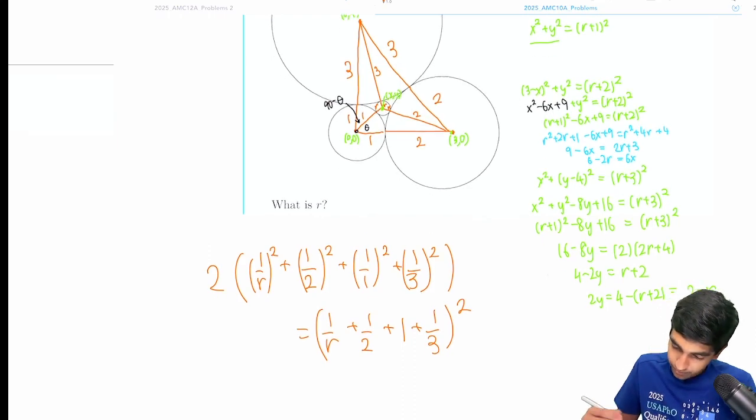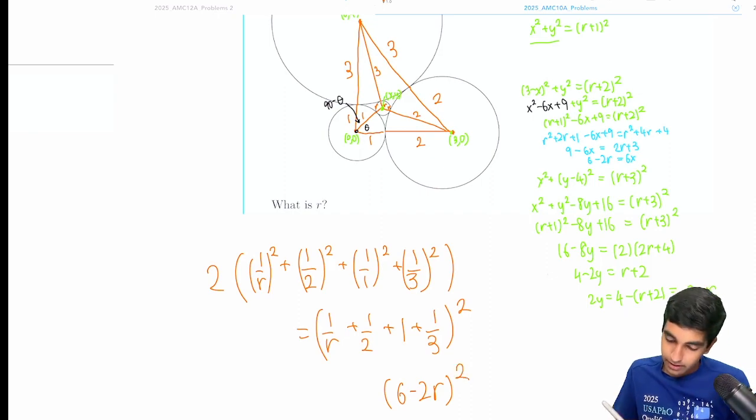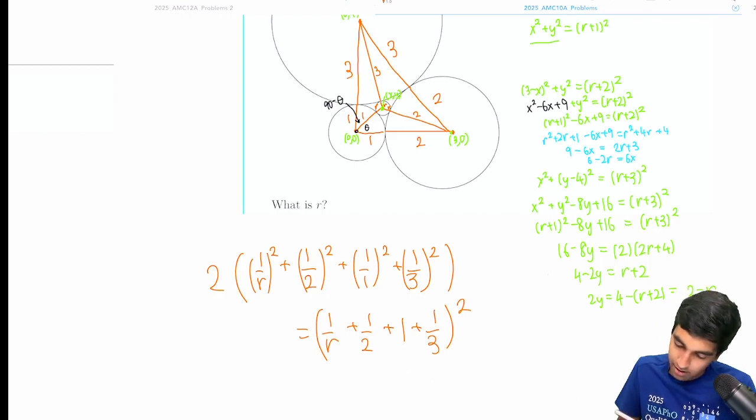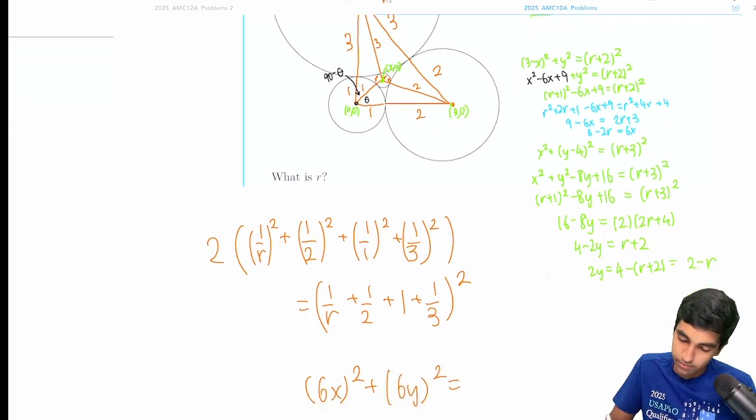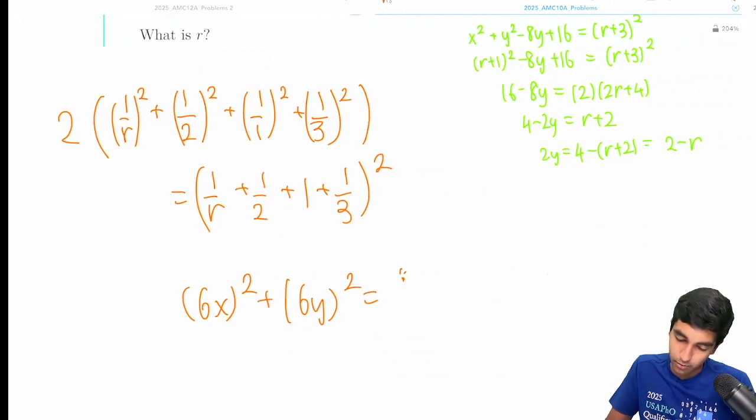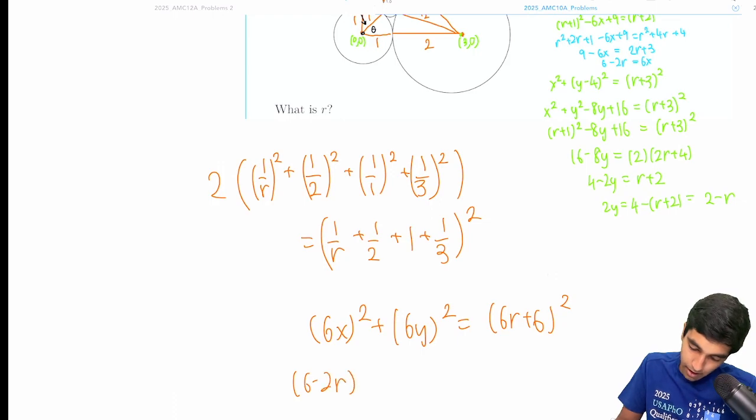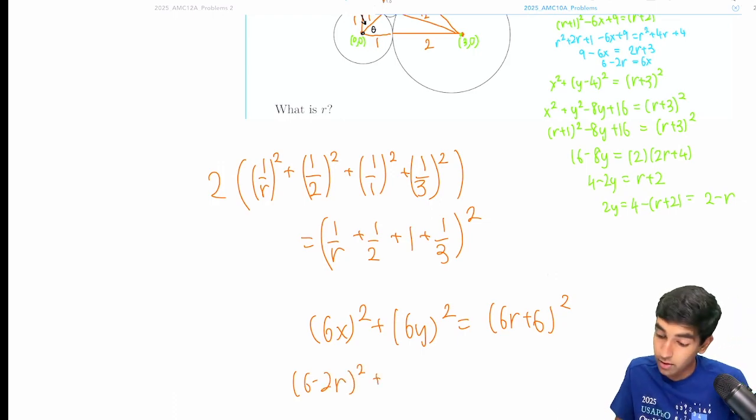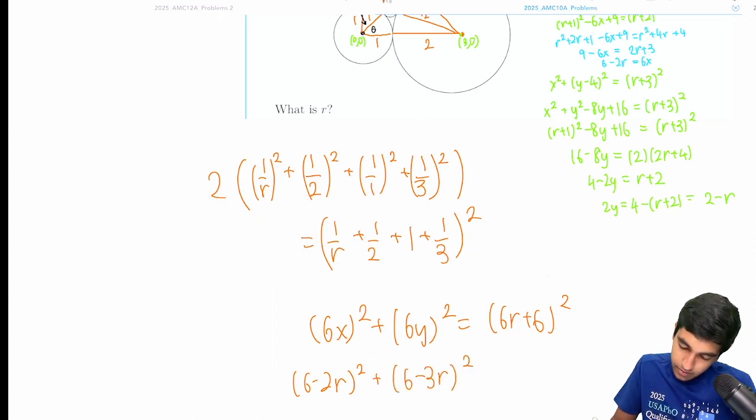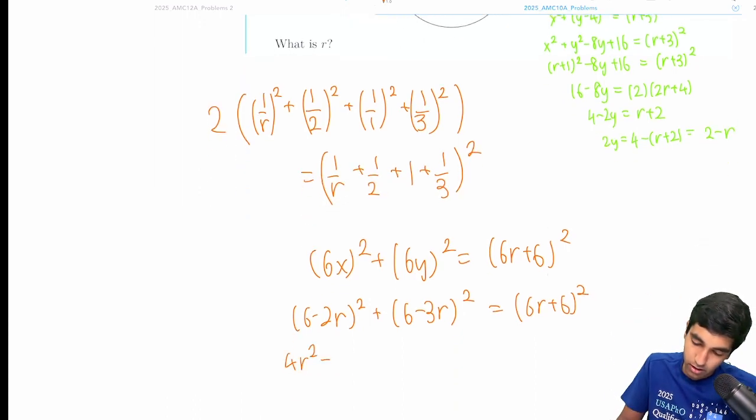That would be 6 minus 2r squared. That's 6x squared. So let's just say that this is 6x squared plus 6y squared equals 6r plus 6 squared. And then we'll substitute 6x as 6 minus 2r. 6y is just 3. We'll just say it's 6 minus 3r, equals 6r plus 6 squared. And then again, the same trick of just flipping the order mentally. So that's minus 24r plus 36. 9r squared minus 2 times 6 times 3, 36r plus 36 equals 6r squared.